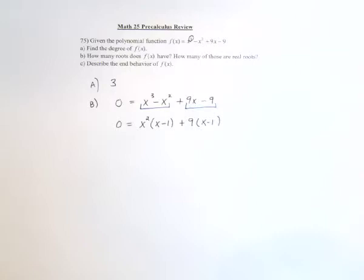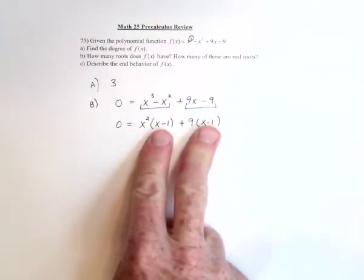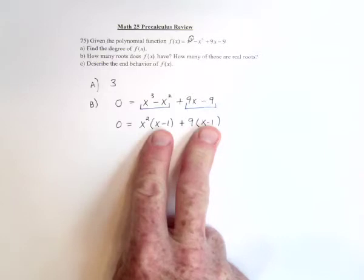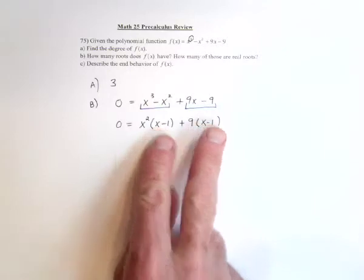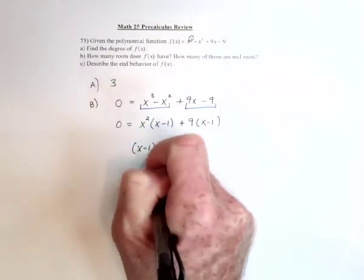Now, the only way that factor by grouping works is if the same thing shows up in these two places right here. Doesn't really matter what it is, as long as it's the same thing in each place. Because then, you can factor that out. If it shows up in both of them, you can go ahead and factor it out.